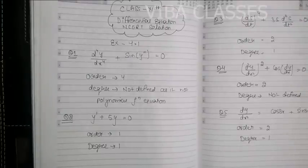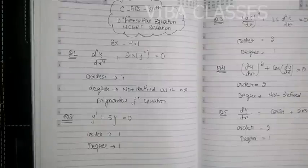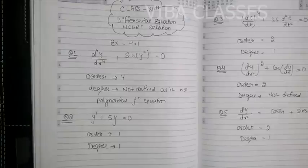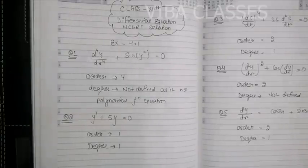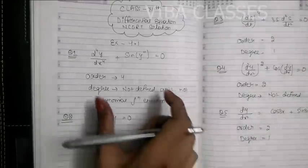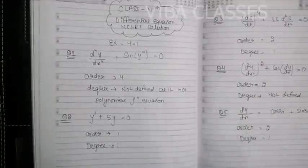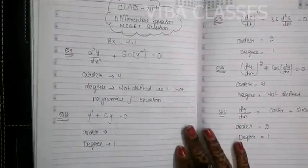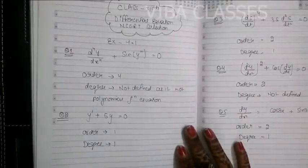What is a differential equation? A differential equation is basically a special type of integration. You also have to study the integration chapter and the anti-derivative method. Differential equation is nothing but a special type of integration. When you take the derivative of a function, we call the result a differential equation.